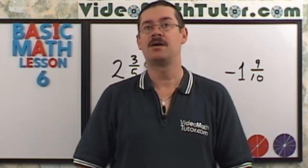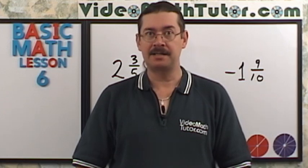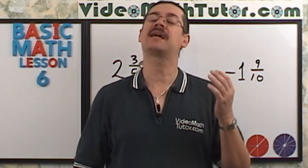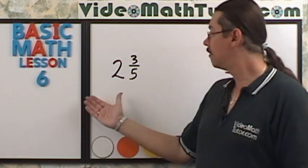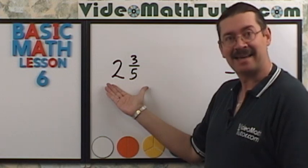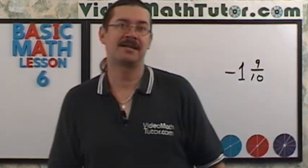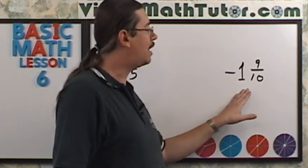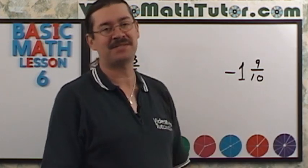When reading mixed numbers, always use the word 'and' between the integer part and the fractional part. How would you read this? This is 2 and 3 fifths. Here we have negative 1 and 9 tenths.